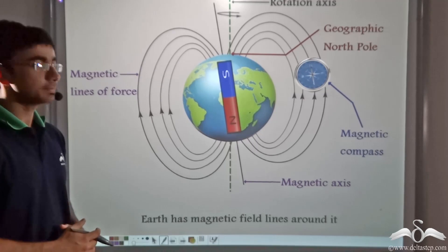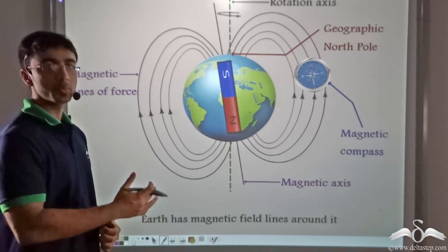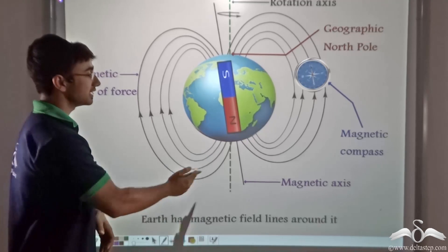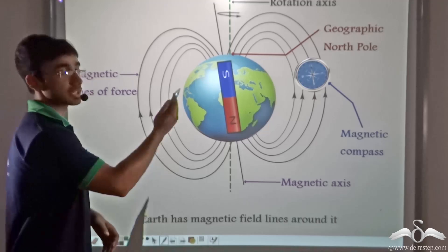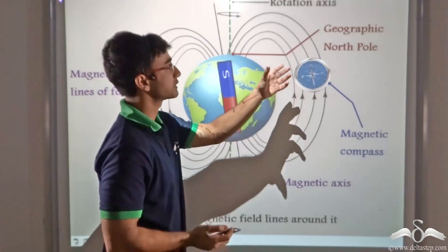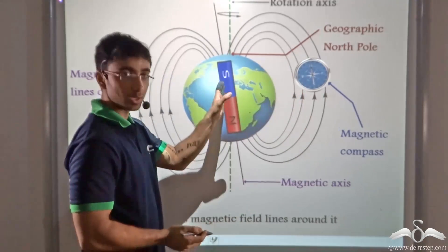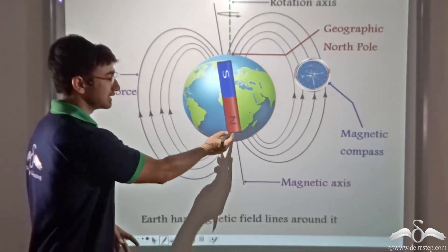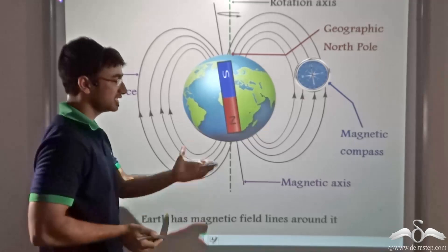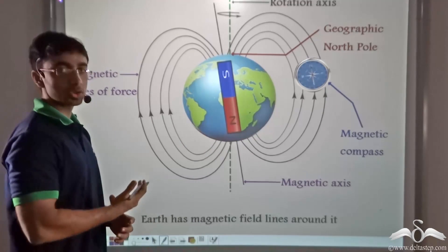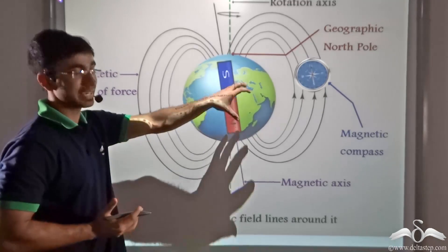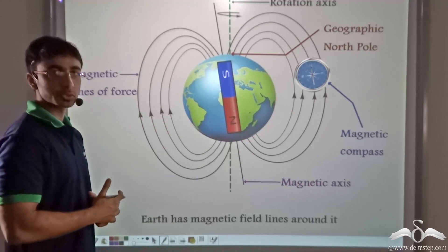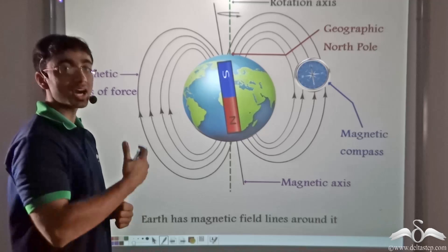If you recall from our previous lecture, I mentioned how we can find out the magnetic field of the earth, or in other words the field lines of the earth, with the help of a compass. A compass needle always points towards the magnetic south, which is the geographic north, and the opposite direction is the magnetic north, which is the geographic south. Now let us study more about the behavior of the magnetic needle in the presence of the earth's field and see what happens when it is placed around any other magnet.